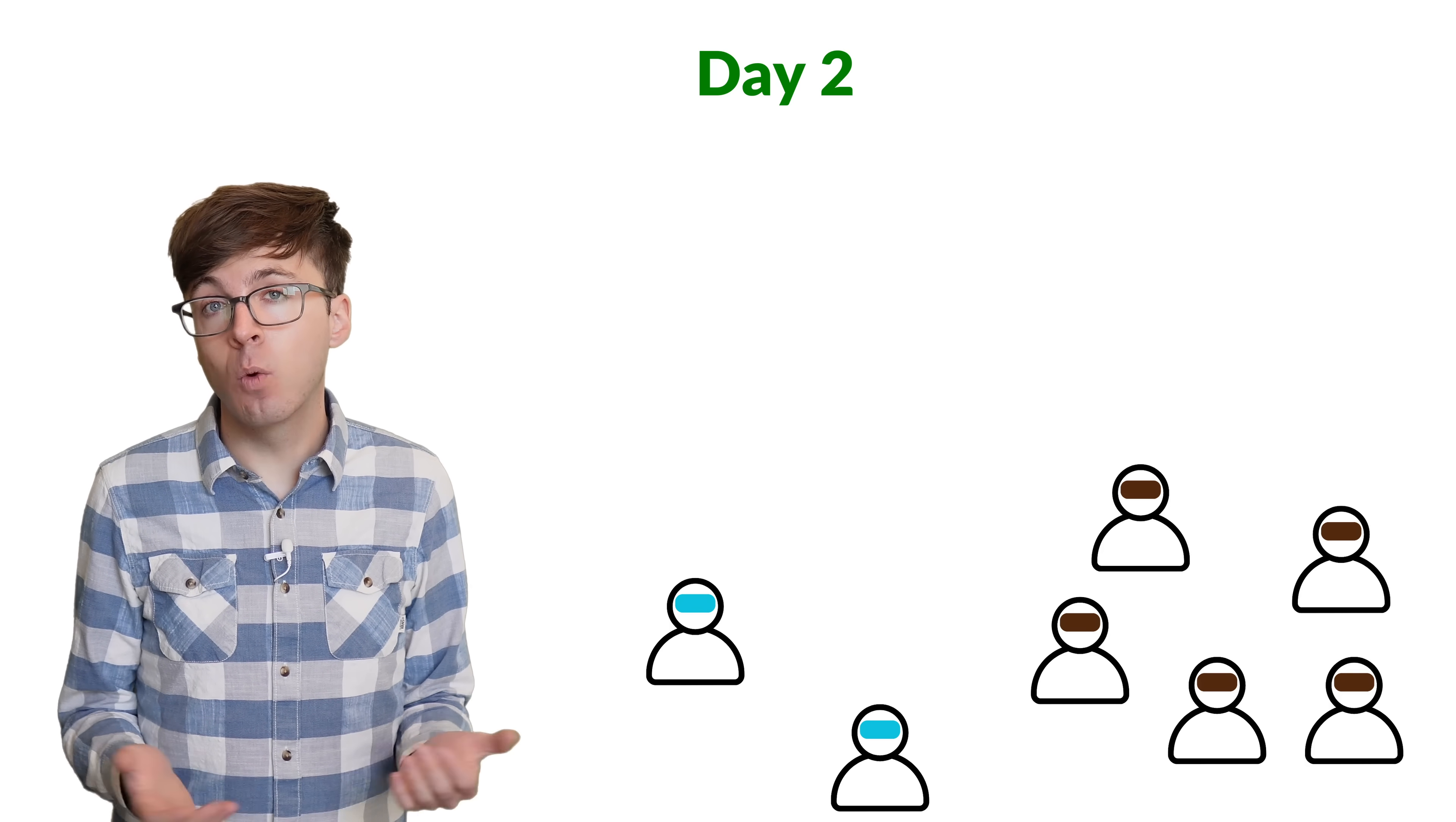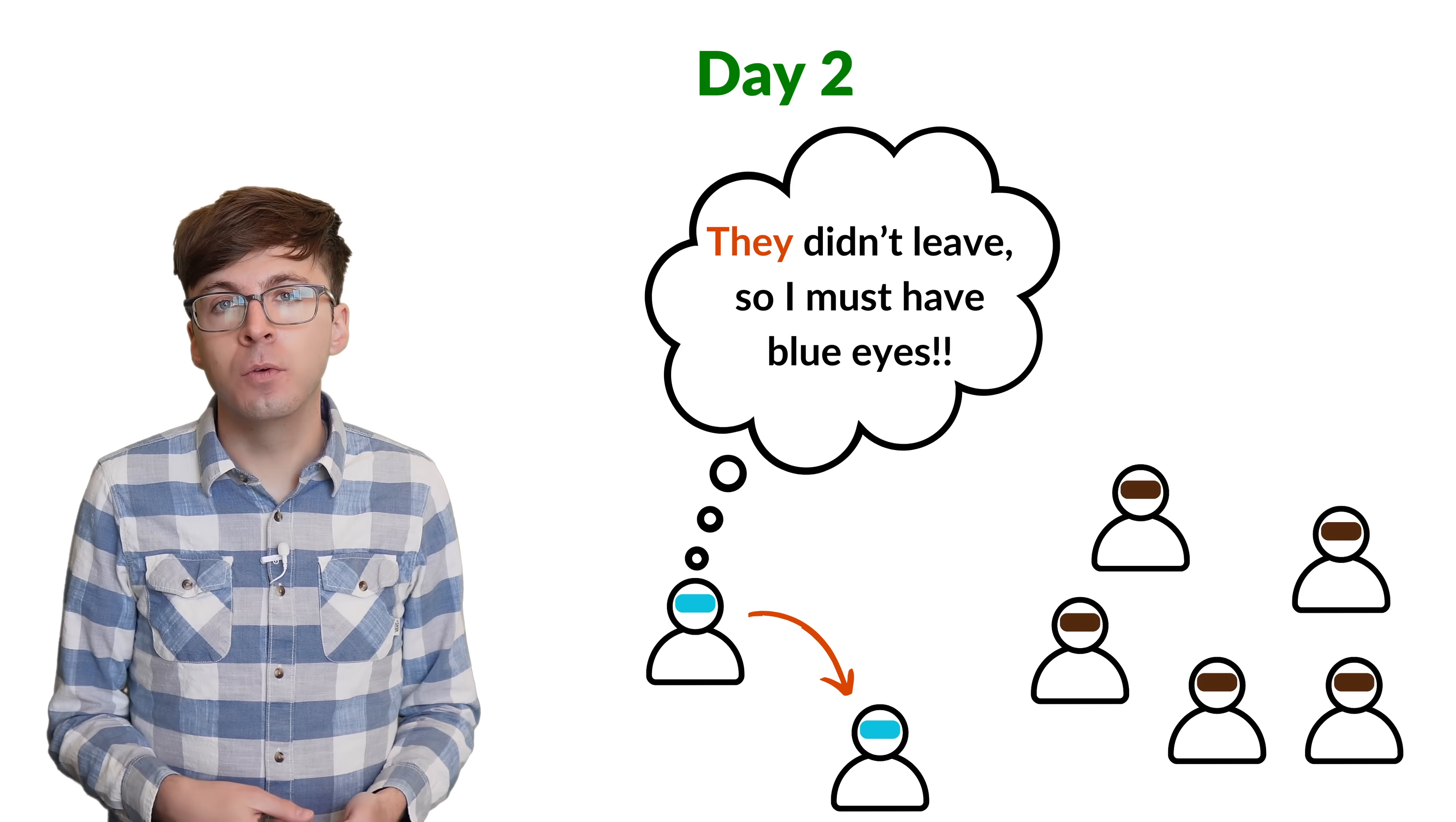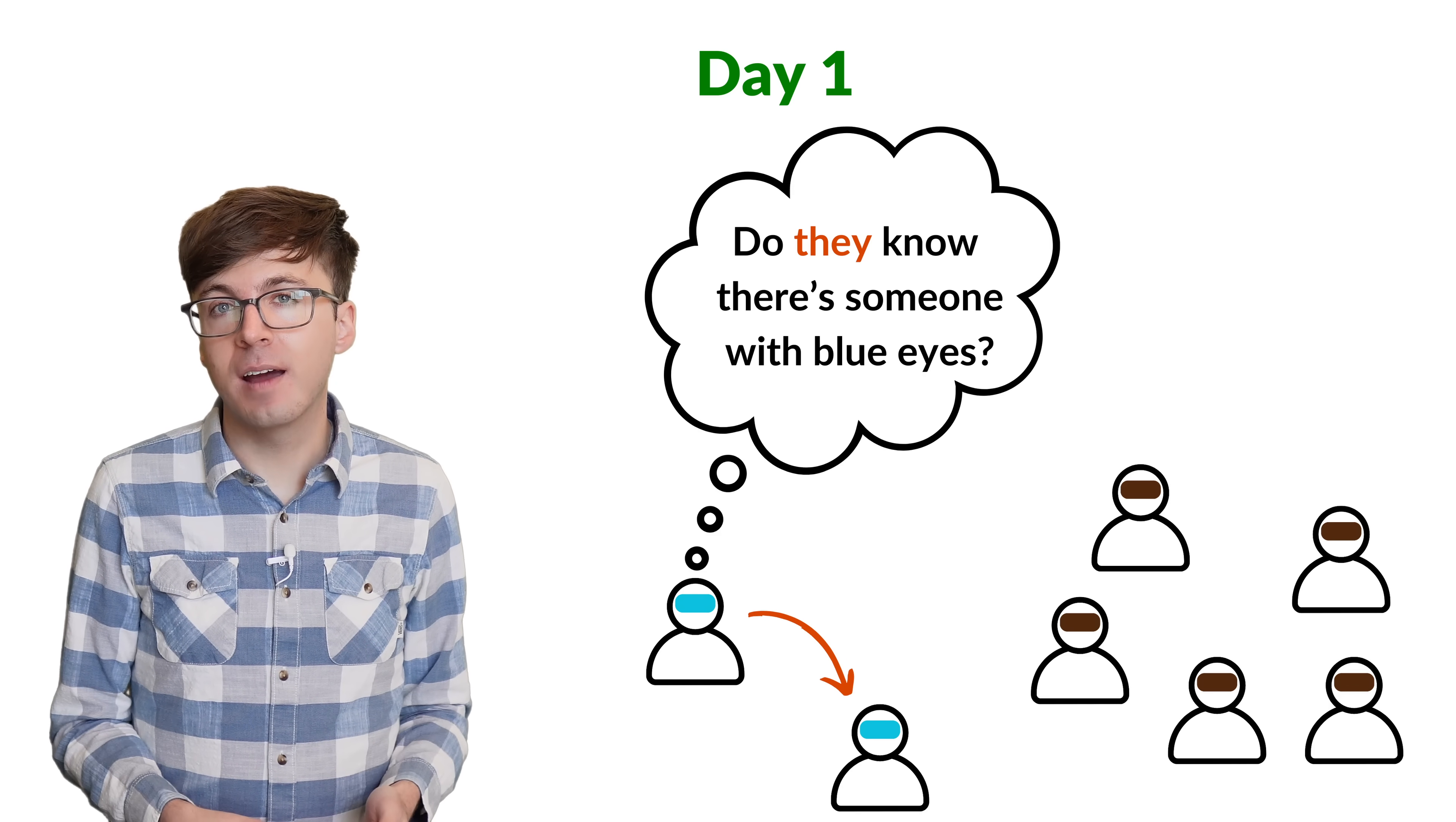On the first night, no one leaves. The second day, you see the blue eyed person is still there. That must mean that they saw a blue eyed person who must be you. Now you know that you have blue eyes, and you will leave at midnight on night two. The other blue eyed person figures out the same thing when they see that you didn't leave on the first night. Even though the stranger said a fact that everyone already knew, you thought that the other blue eyed person might not know that.